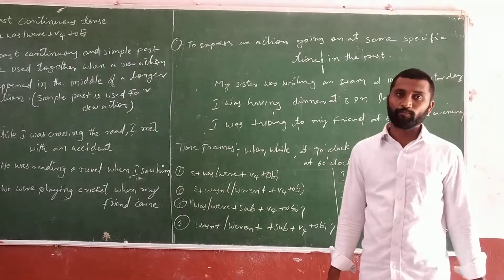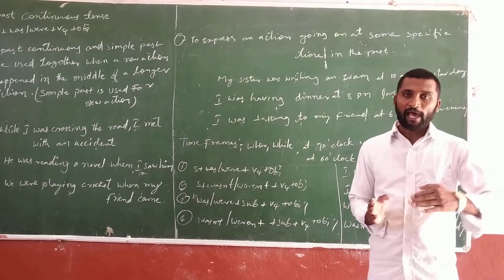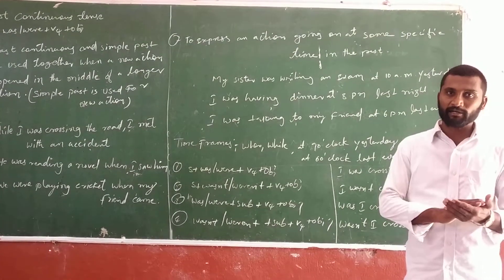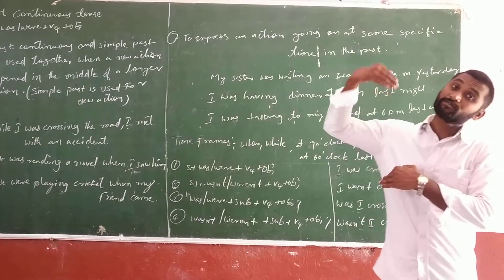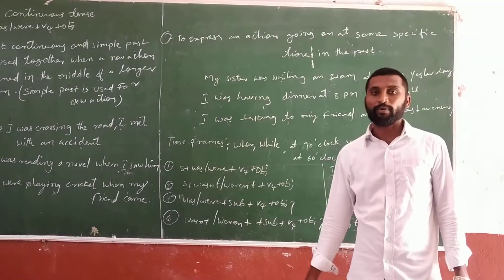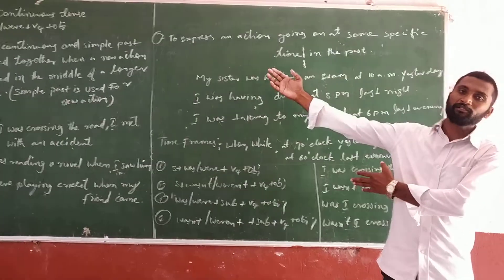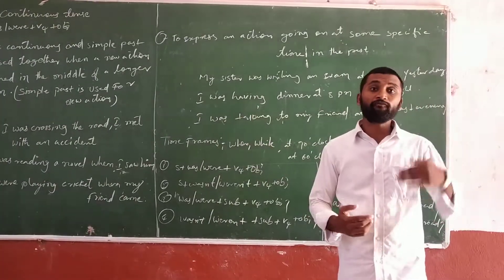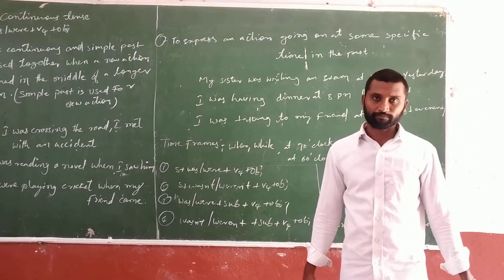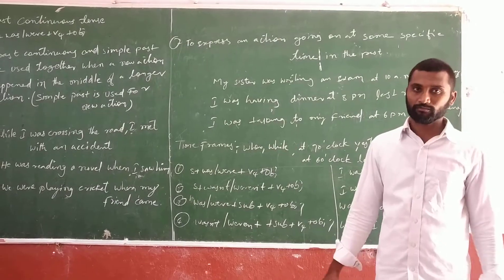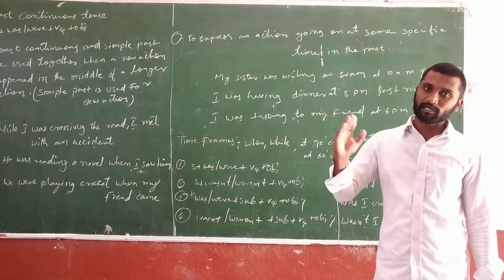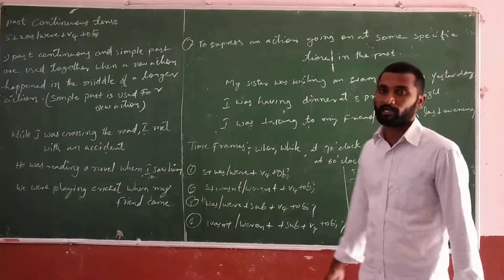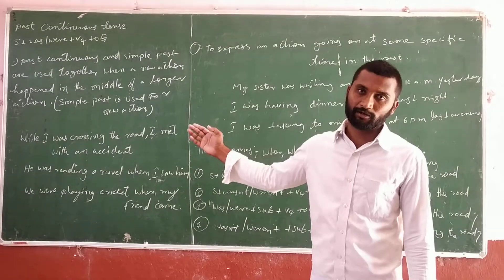Two usages are very important. First: an action going on at some specific time in the past — action started and is going on, like 'I was explaining English grammar.' Second: combining with 'while' and 'when', using simple past as well. Both past continuous and simple past work together. By this, we have completed past continuous tense.